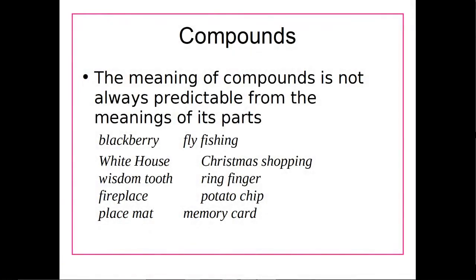The meaning of these compounds is not always going to be predictable from the meanings of its parts. For example, we have the word 'blackberry,' where we take 'black' plus 'berry,' and basically that means a certain type of berry — or a certain type of phone, depending on which blackberry you're talking about. That one is maybe predictable if we're talking about the actual berry.